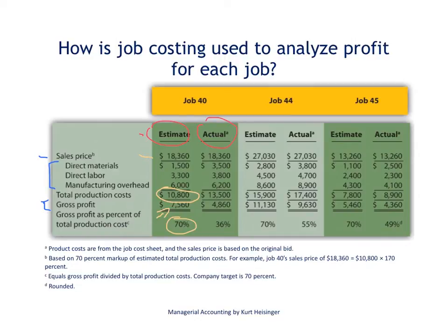Let's assume that the sales price is the contract, and that we did indeed receive $18,360 from our customer for this custom table that we built for them. But when you look at the actual column and the costs in the actual column, you see that our total production costs were higher than we anticipated. That's the advantage of a job costing system — we can get into the details and see where those differences took place.